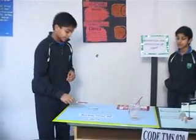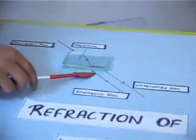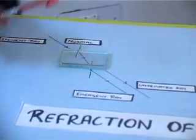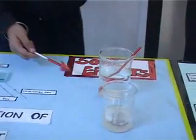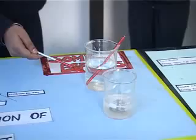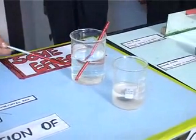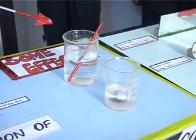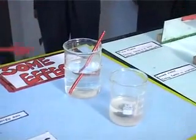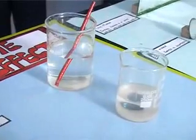There are two bending points: one is from air to glass and another from glass to air. Now I will show you some effects of refraction. As you can see, we have placed two vessels here — in one there is a pencil and in the other there is a coin. You can see the pencil appears to be bent and the coin appears bigger. These are effects of refraction.